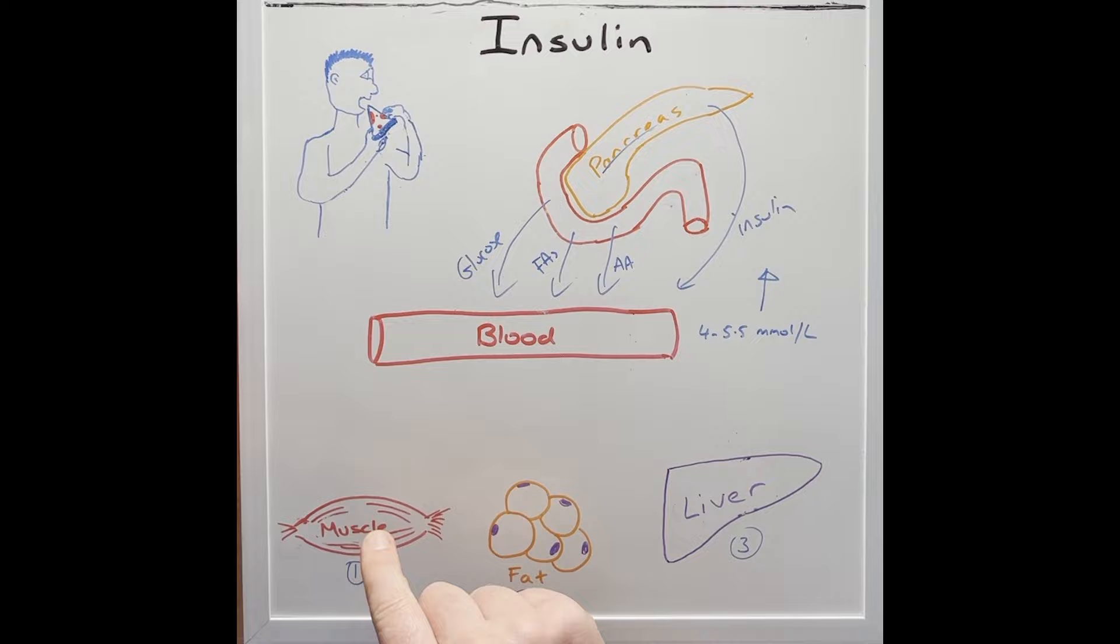But insulin also helps the glucose to be stored in the muscle as a carbohydrate known as glycogen. Additionally, insulin can also help to suck up the amino acids into the muscles, which can be made into proteins.